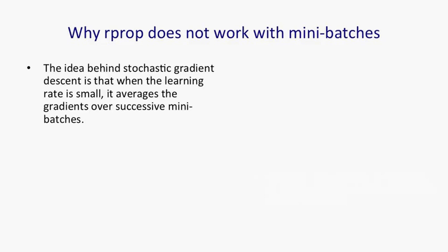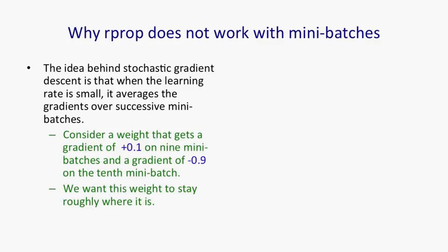One question is: why doesn't RProp work with mini-batches? People have tried it and found it hard to get to work — you can get it to work with very big mini-batches using much more conservative changes to the step sizes, but it's difficult. The reason it doesn't work is that it violates the central idea behind stochastic gradient descent, which is that when we have a small learning rate, the gradient gets effectively averaged over successive mini-batches. Consider a weight that gets a gradient of plus 0.1 on 9 mini-batches and then a gradient of minus 0.9 on the 10th mini-batch — what we'd like is for those gradients to roughly average out so the weight stays where it is.